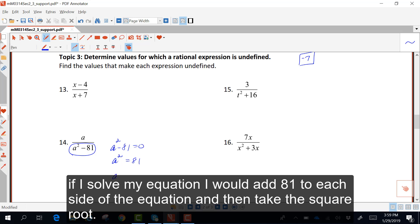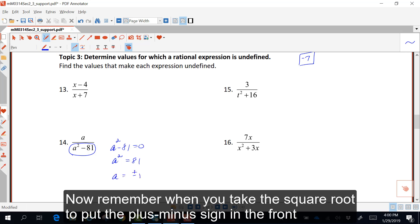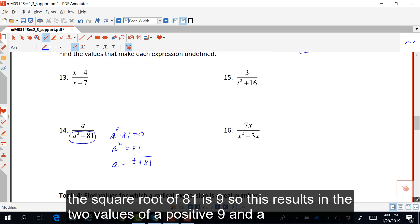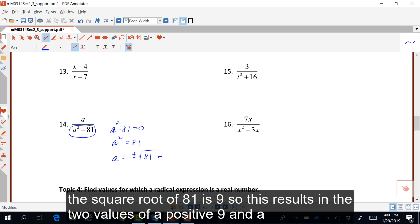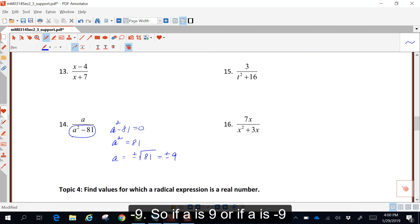and then take the square root. Now remember when you take the square root to put the plus-minus sign in front. The square root of 81 is 9, so this results in the two values of a positive 9 and a negative 9.